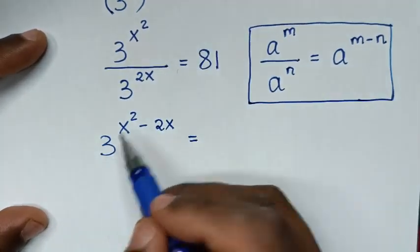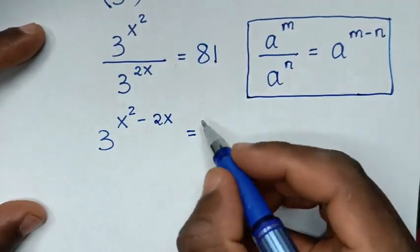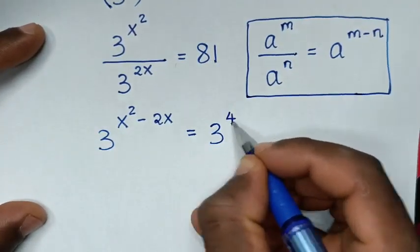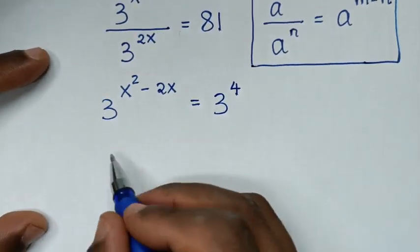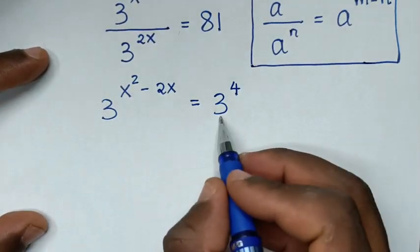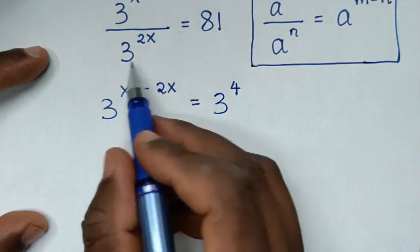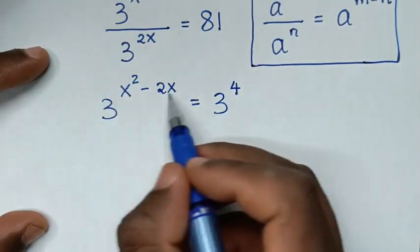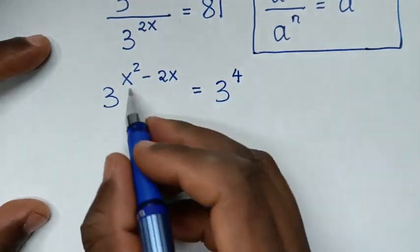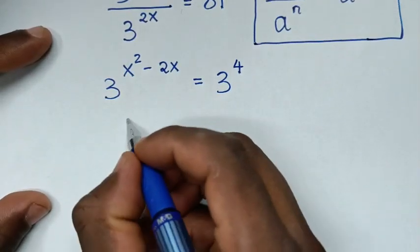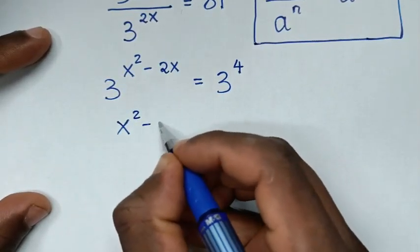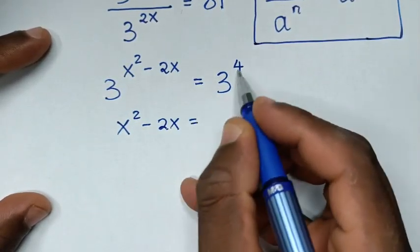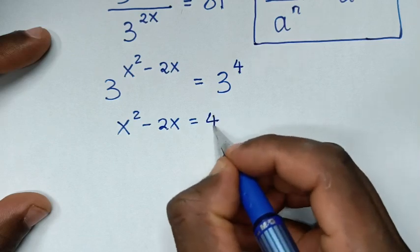The base of 3: 81 is the same as 3 power of 4. So when we compare, we have the same base of 3, and we compare the powers, giving us x square minus 2x is equal to 4.